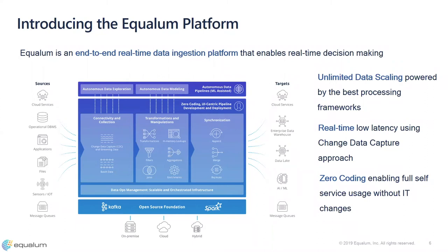We have full-blown ETL and transformation capabilities, but the difference from most ETL tools is that it can be done in real time on a per-event basis — as an event comes in, it's transformed and pushed immediately to the target. When pushing to the target, we have various modes: append mode logs what happened regardless of insert/update/delete; replication mode mirrors the operation at the target; and a merge or upsert operation — if the data is there, update it; if not, insert it — keeping source and target in sync.